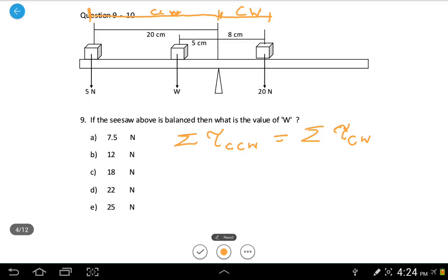Now, counterclockwise torque will take the 5N box first, times it with the distance from the pivot. So that would be 5 times 20, plus the second piece, this is W times 5. Then that should equal to this side. This side is 20 times 8.